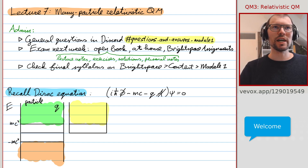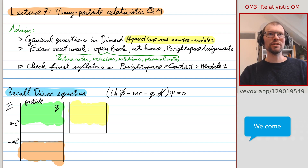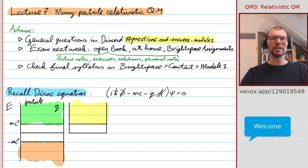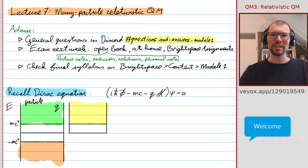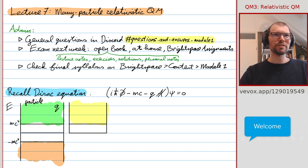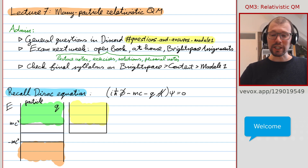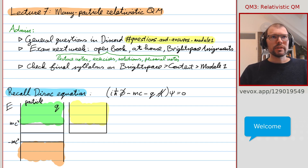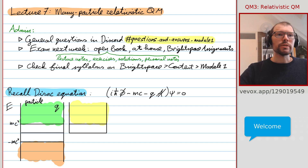This is the grand finale of relativistic quantum mechanics, at least the part we're considering in this course, before moving on to quantum field theory and the standard model. Here we're finally going to resolve some of the problems we encountered in the one-particle relativistic quantum mechanics.